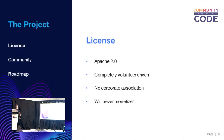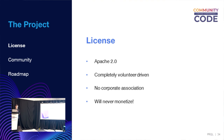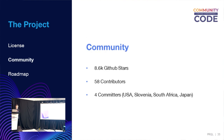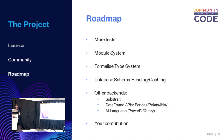Now a little bit about the project. We're Apache 2.0 licensed, completely community volunteer-driven, no corporate association and we will never monetize. To give people faith in that, I attended a number of ASF incubator track sessions and we might explore that path. In terms of our community, we've got 8,600 GitHub stars, 58 contributors to date, and four committers who are geographically diverse — USA, Slovenia, South Africa, and Japan. We're doing all development online on GitHub or Discord.